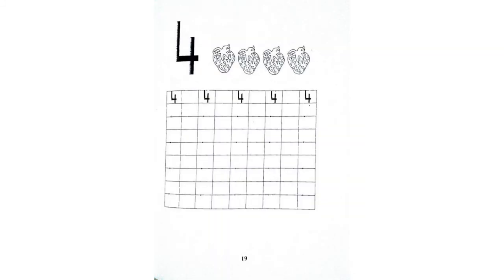Okay, KG1. In the classwork book, page 19, you are going to write number 4 inside the squares. But first, let's count how many strawberries do we have. One, two, three, four. Great.